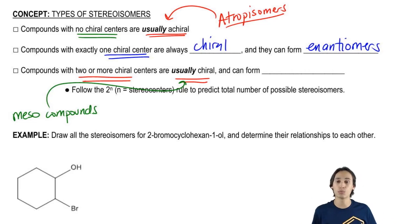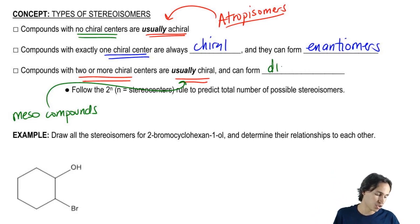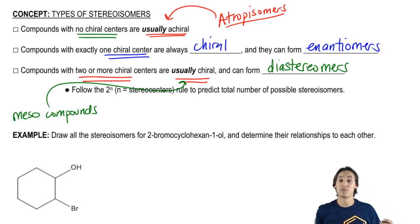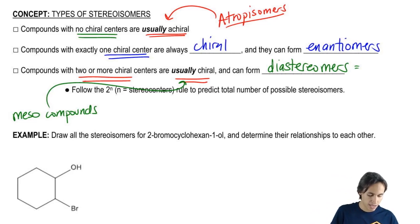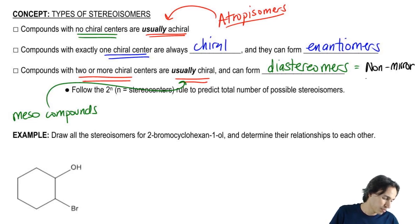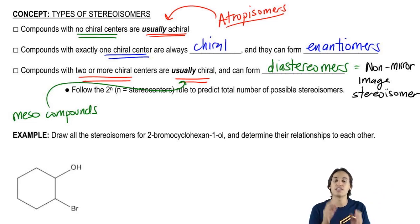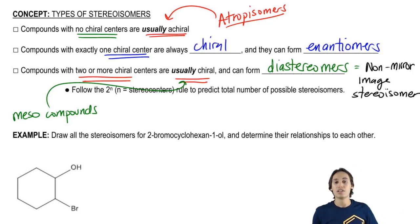Now if a compound has two or more chiral centers, it will not necessarily form only enantiomers. It also has the ability to form what's called diastereomers. The definition of a diastereomer is simply a non-mirror image stereoisomer — basically a stereoisomer that doesn't fall neatly into the enantiomer category. Remember that enantiomers are always 100% the mirror image; diastereomers are anything that doesn't look exactly like the mirror image, but is still a stereoisomer.